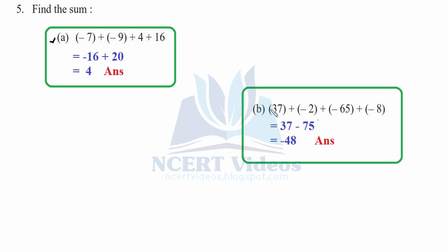Part b: three negative numbers and one positive. Add all the negative numbers: eight plus two gives ten, and ten plus 65 gives 75, so the total negative is minus 75. The positive number is 37. Signs are different: subtract 37 from 75 to get 48. The higher number was negative, so the sign is negative — therefore the answer is negative 48. That was question five.